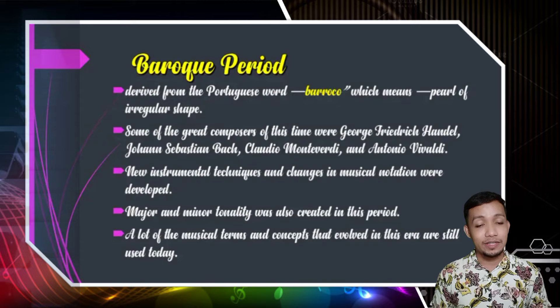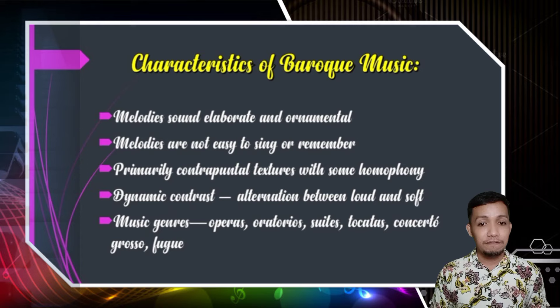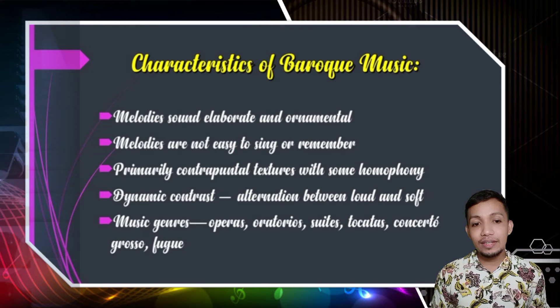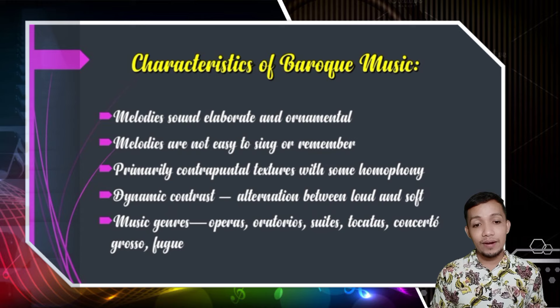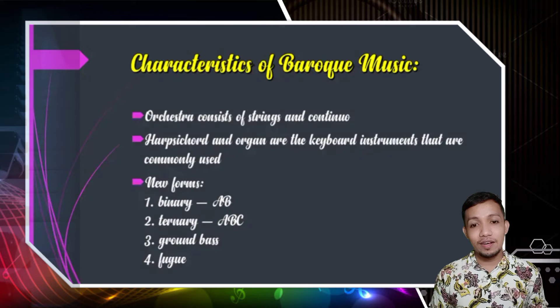There are different characteristics of Baroque music. First, melodies sound elaborate and ornamental. Second, melodies are not easy to sing or remember. Third, primarily contrapuntal textures with some homophony. Fourth, dynamic contrast — alteration between loud and soft. And fifth, music genres were operas, oratorios, suites, toccatas, concerto grosso, and more. Other characteristics of Baroque music are orchestra consisting of strings and continuo. Harpsichord and organ are the keyboard instruments commonly used. New forms include binary (AB), ternary (ABC), ground bass, and more.